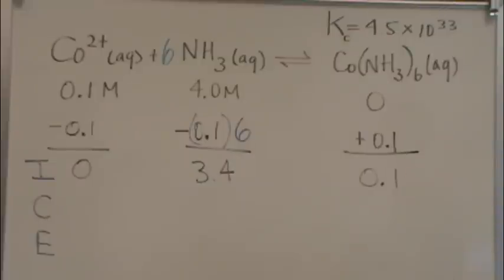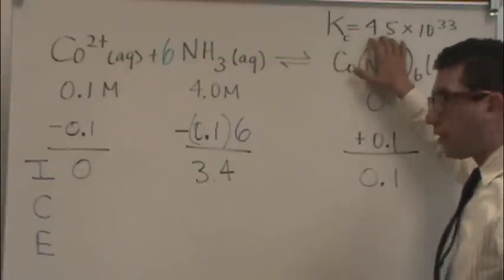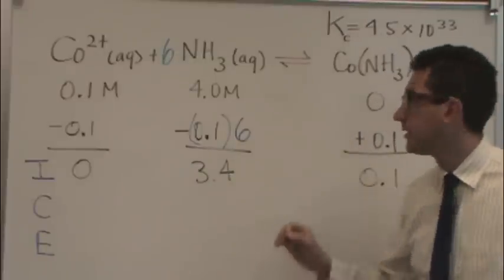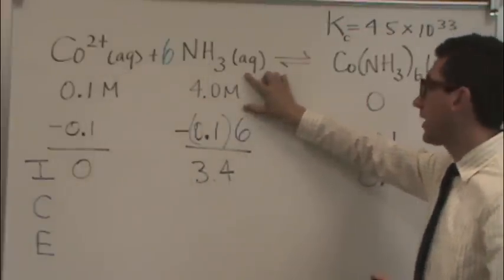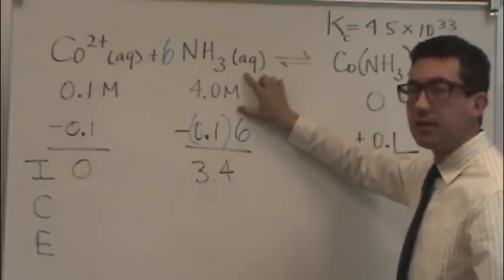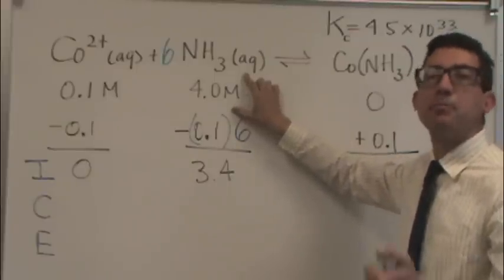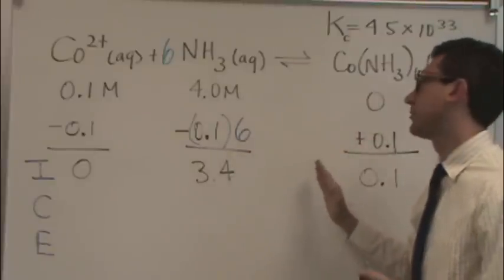Okay, before I go through and write down the ICE table so that you can see what it would look like, let me review for a moment the general concept. When you need to always look at K and see, is there a 0 on the unfavored side? In this case, the unfavored side was this side right here, the reactants, and there's no 0 there. In that case, you need to do what's called a stoichiometric problem before the ICE table. And that's what the top part of this represents. It's a stoichiometric problem.